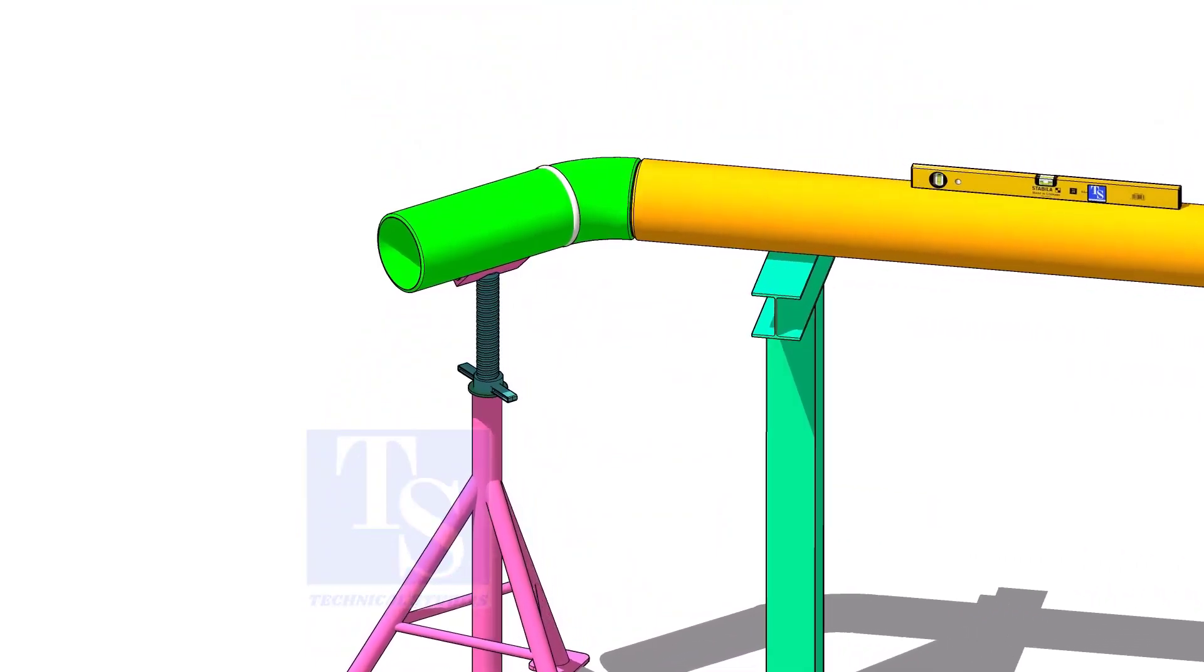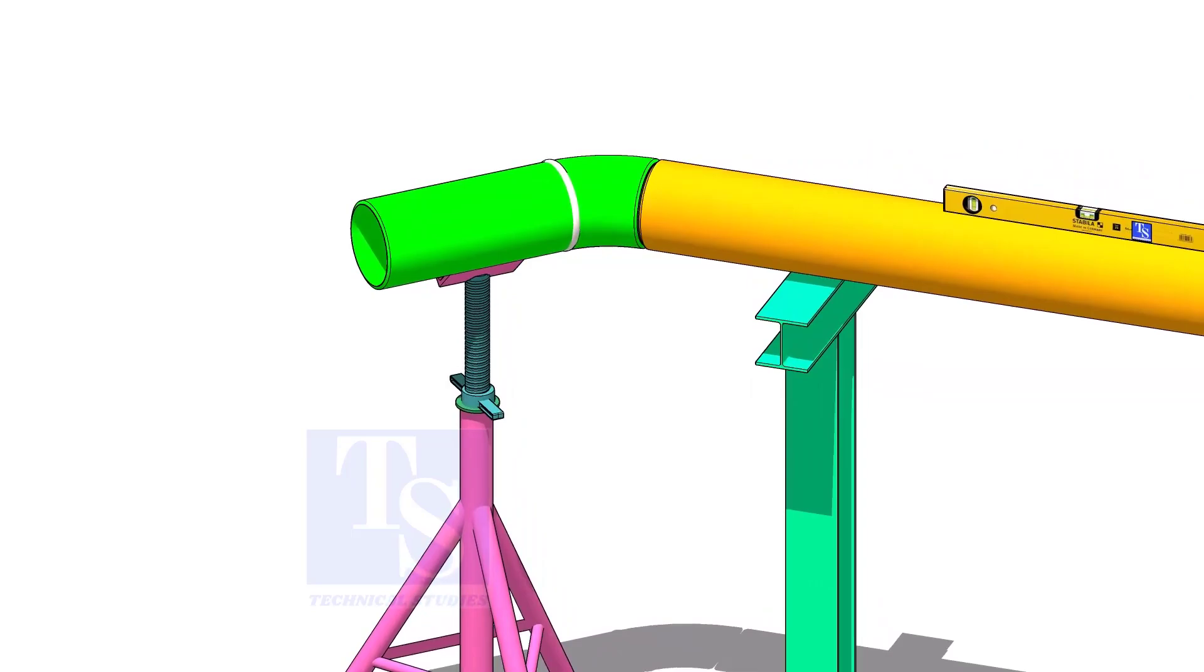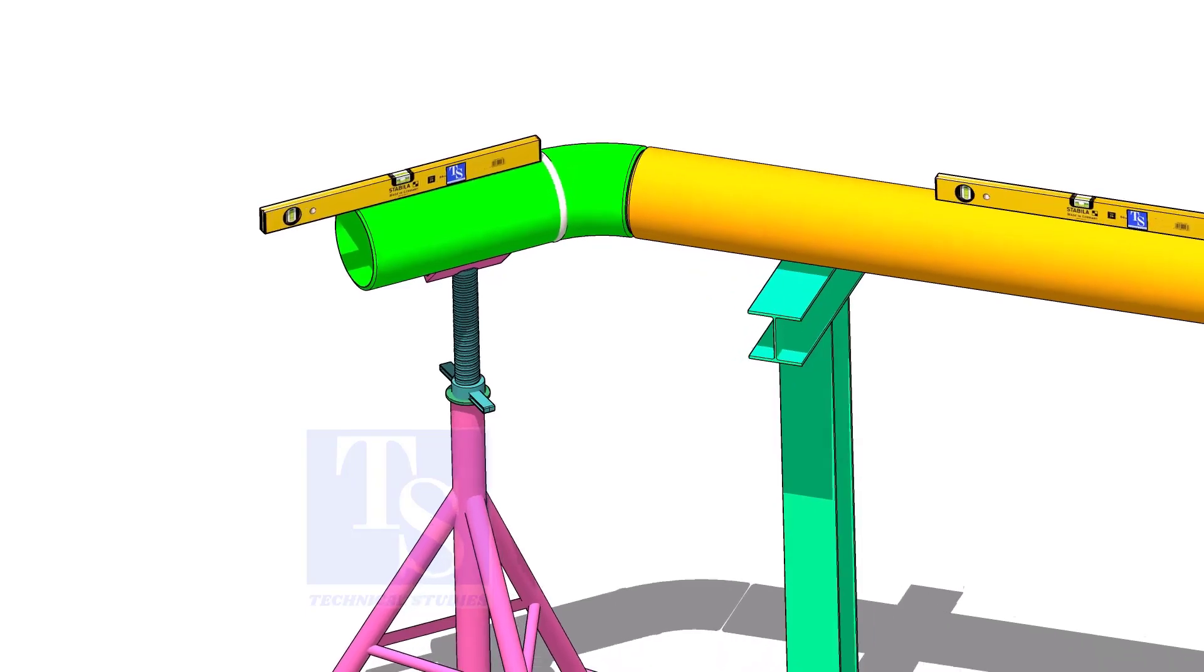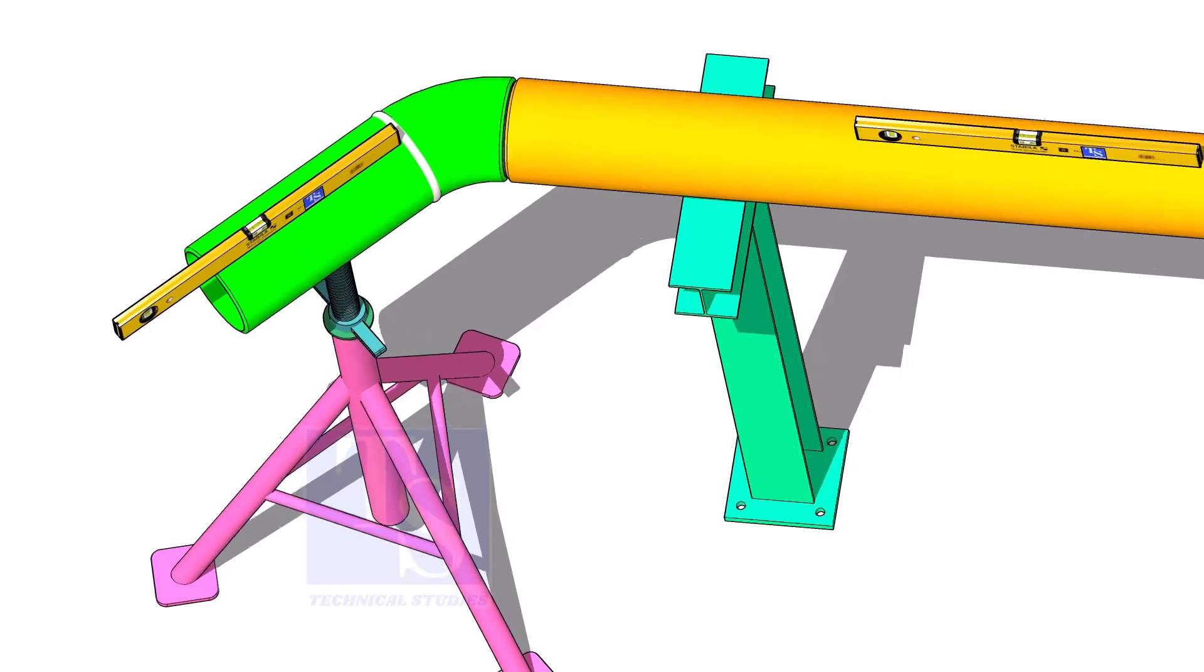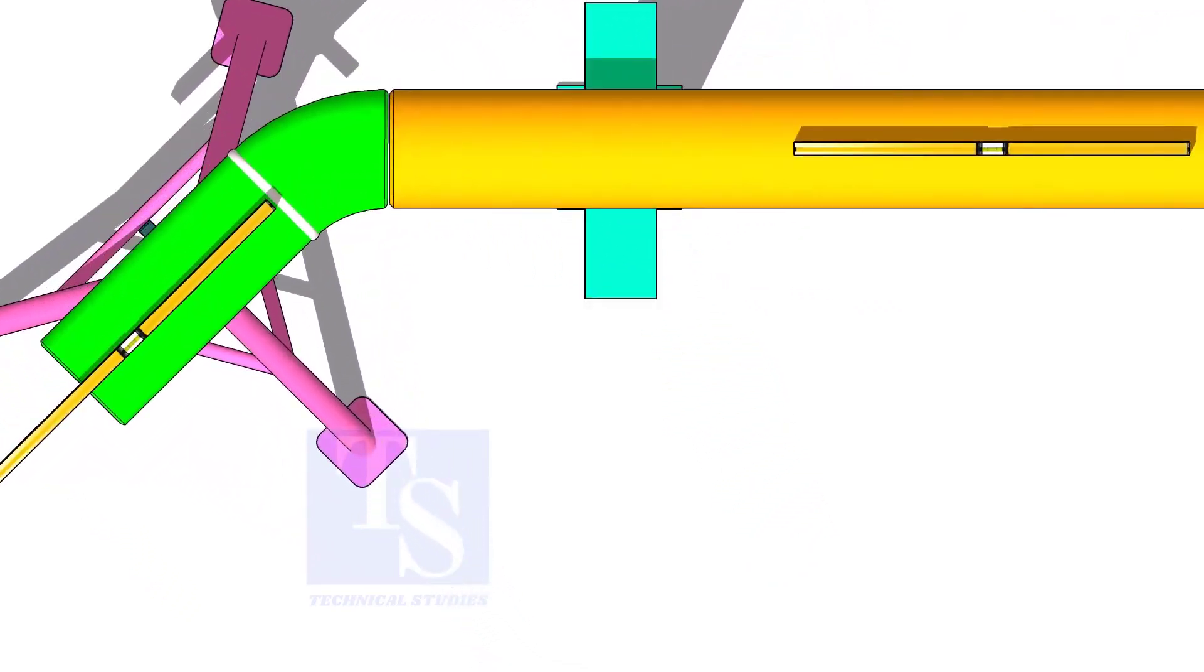Put spool number four in its location, not vertically, but in a horizontal position. Correct the overlap and the gap and tack weld at the top and bottom side of the joint.